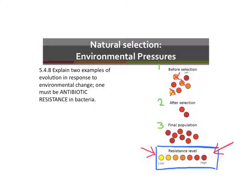Because they're the ones that survive, they reproduce, and those genes are now passed on to their offspring. And so the final population of bacteria are all resistant to the antibiotic.